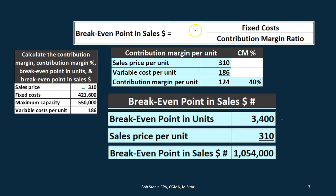This formula is often the one that will be used in exam situations. If a multiple choice question only gives you enough information to find the contribution margin ratio but not the sales price per unit, you won't be able to use the alternative method unless you have this formula ready to go. Keep that in mind as we continue.